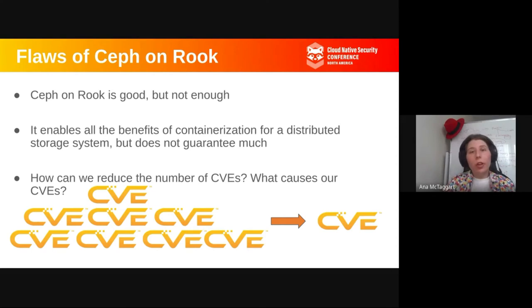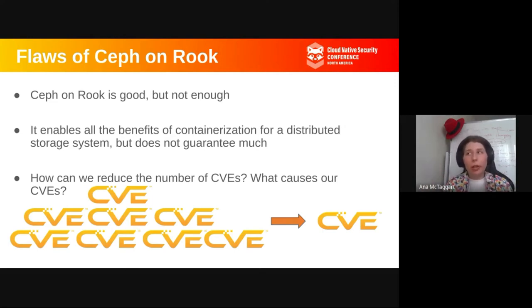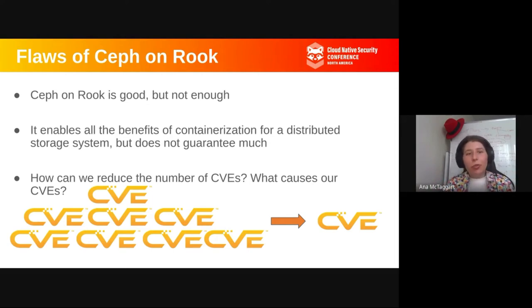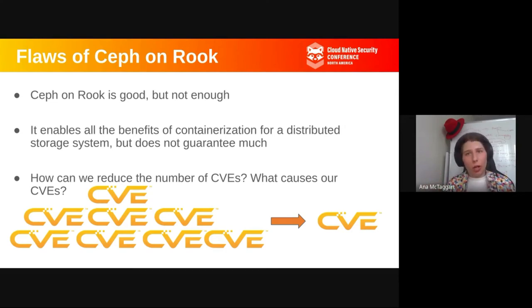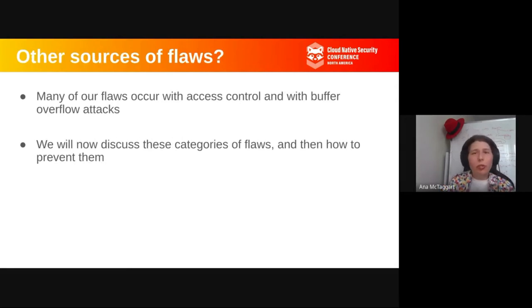This is really state-of-the-art stuff and it's really important. Ceph is continually improving security, as are many other places in industry. But it's not enough — I still have a job analyzing CVEs day to day. It enables all the benefits of containerization and a lot of security benefits, but it doesn't formally guarantee a whole lot. It's not bulletproof. We still get CVEs. What causes our CVEs, and how could we reduce the number of them — going from a whole lot of CVEs to just a few?